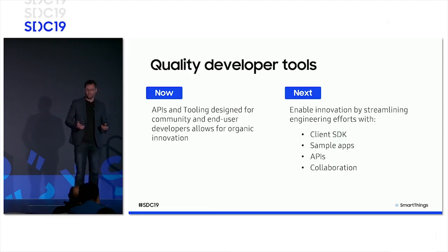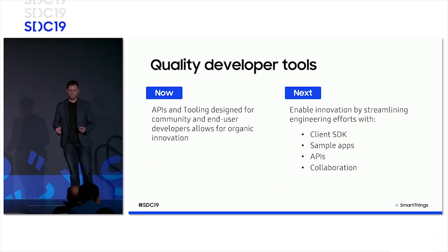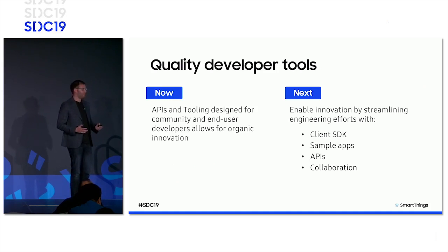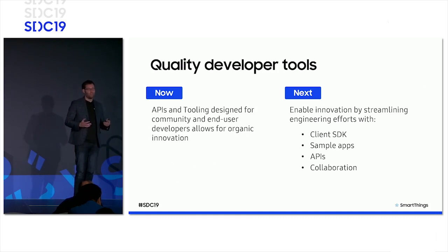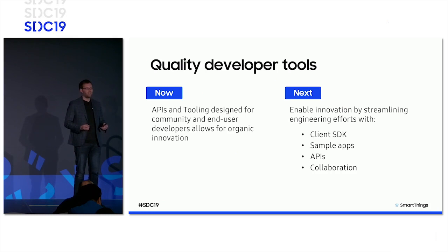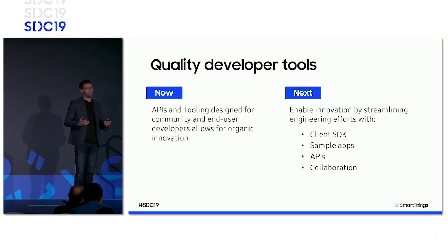Moving on to the second area of focus: quality developer tools. What we have today has enabled our partners to build fantastic products, but we aim to do more for enterprise solutions. Our goal is to accelerate your development by offering a new client SDK that will allow you to build rich experiences on mobile and web. This client SDK is built upon our REST APIs and aims to make the developer's life much easier by abstracting and isolating the complexities of interacting with the SmartThings platform. Our sample iOS and Android applications are built on top of this SDK and can be used to bootstrap your own engineering to build custom applications. We want you to spend time focusing on building business value, not working on just the basic user experience.